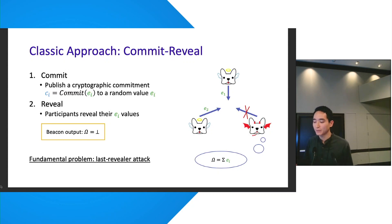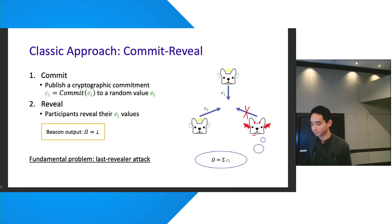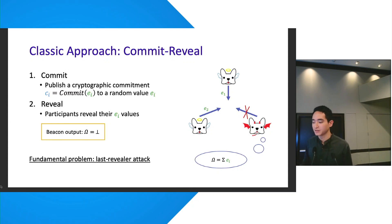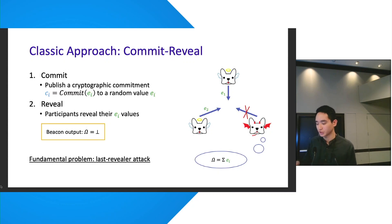This does introduce a bit of bias, and the problem is fundamental in the sense that even an honest failure can incur the same effect. Various DRBs in the landscape can be seen as various patches for this attack.